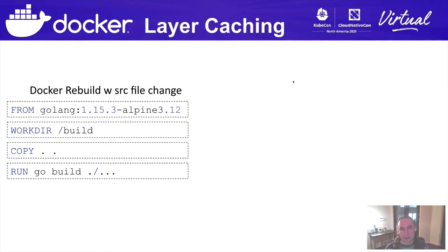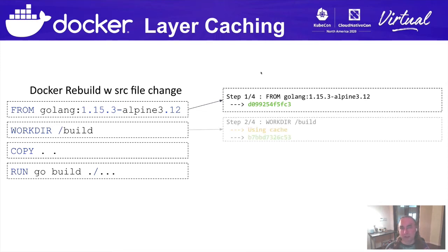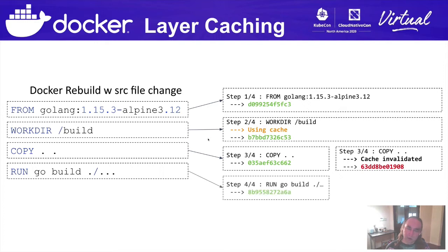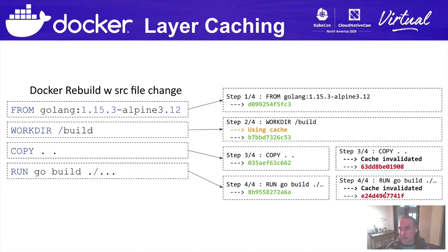But what happens if you do a Docker rebuild with a source file change? We still use the same base image and cached workdir layer. But when we copy in the source code, because it's different from last time, that layer is cache-invalidated. And because of that cache invalidation, the go build step is also invalidated — once a layer has been invalidated, everything that follows it is invalidated in the cache, so we have to redo all that work.